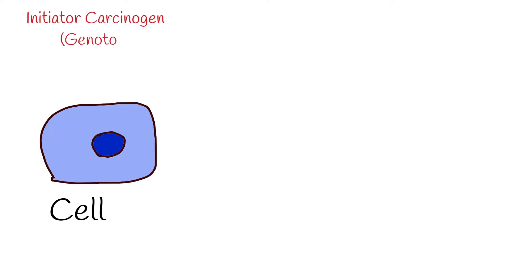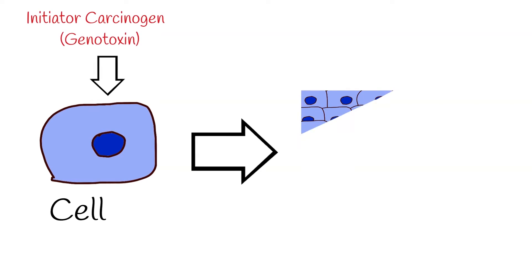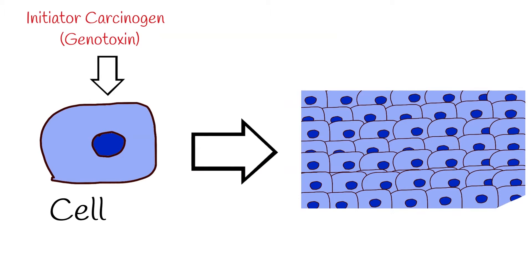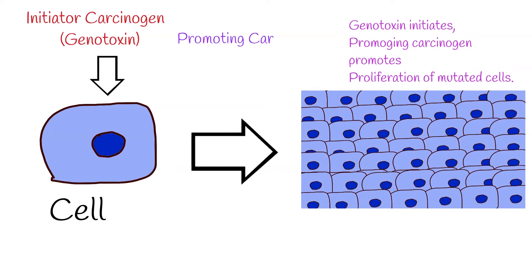Initiator carcinogens cause mutation or damage of DNA. After initiation follows promotion, which means proliferation of mutated cells.